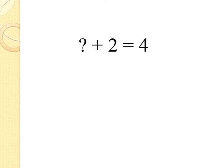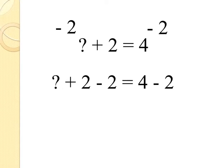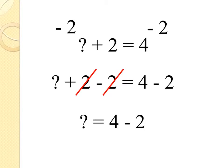So that's a positive 2. I could get rid of it by subtracting 2. But remember, I have to do it to both sides. So I subtract 2 from both sides. So now I have question mark plus 2 minus 2 equals 4 minus 2. The plus 2 and the minus 2 will cancel each other out, leaving me with question mark equals 4 minus 2.